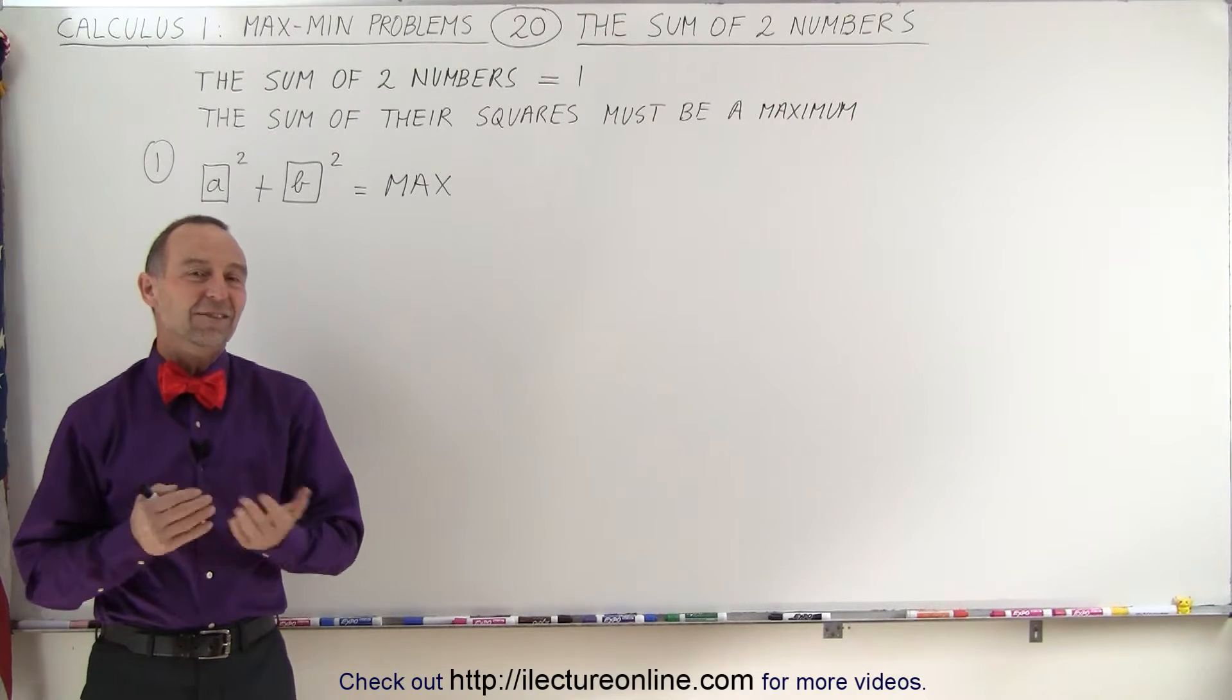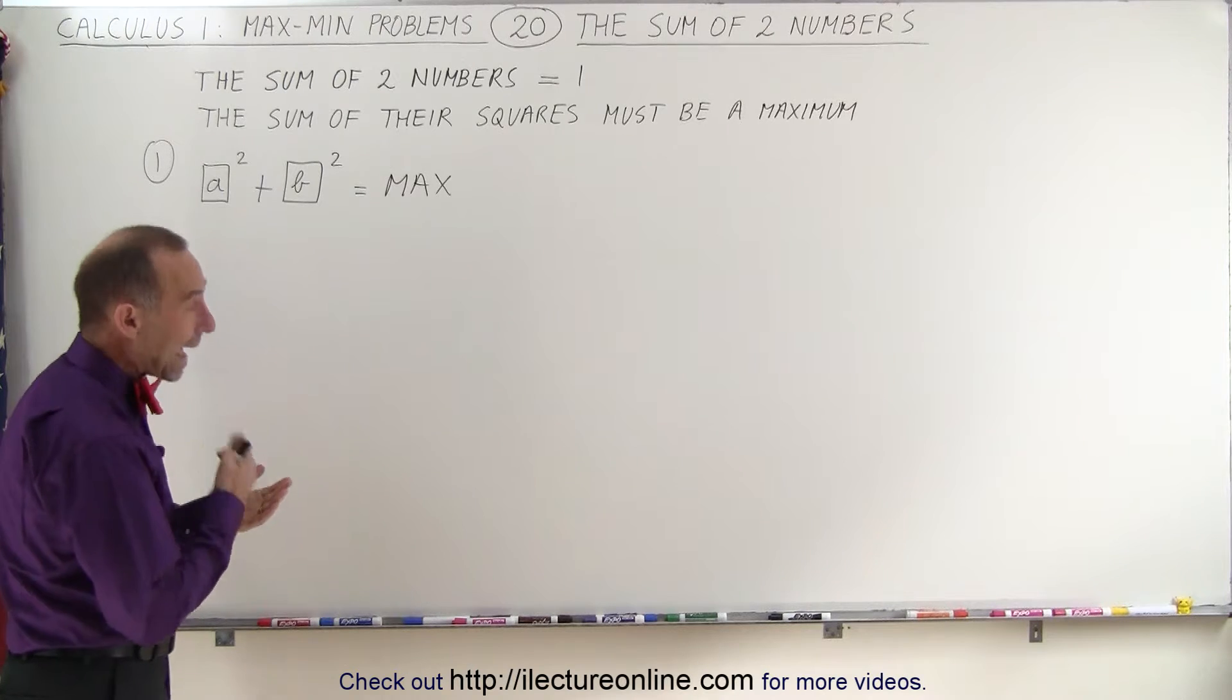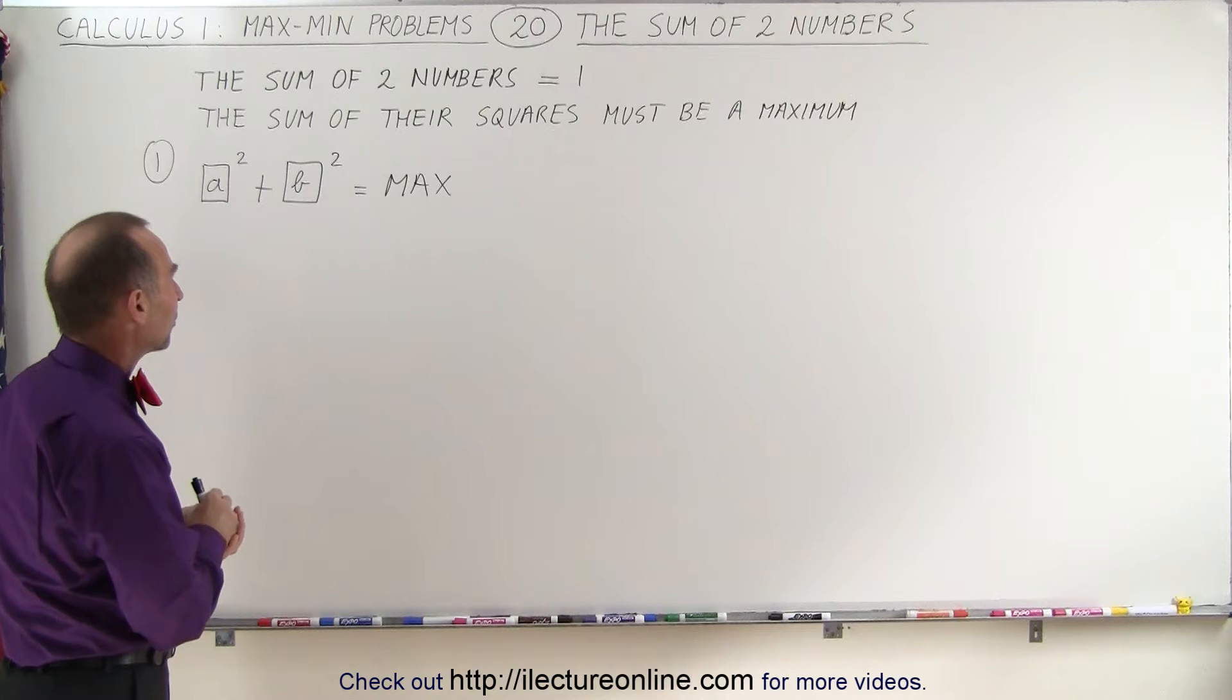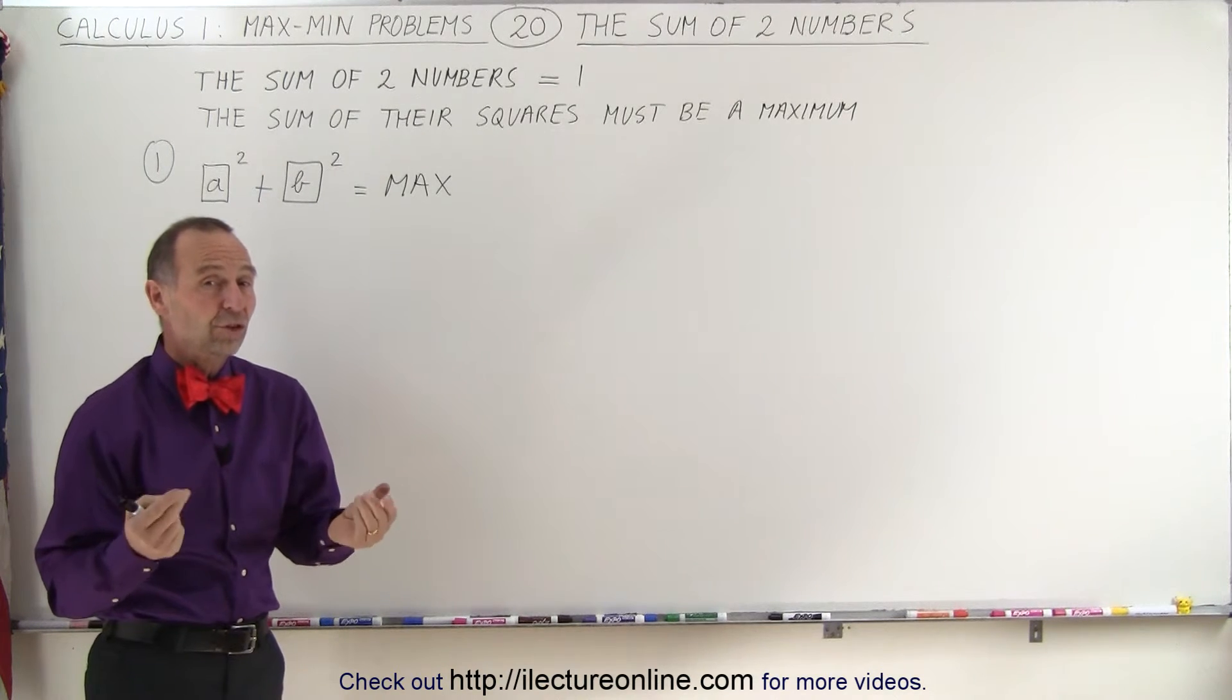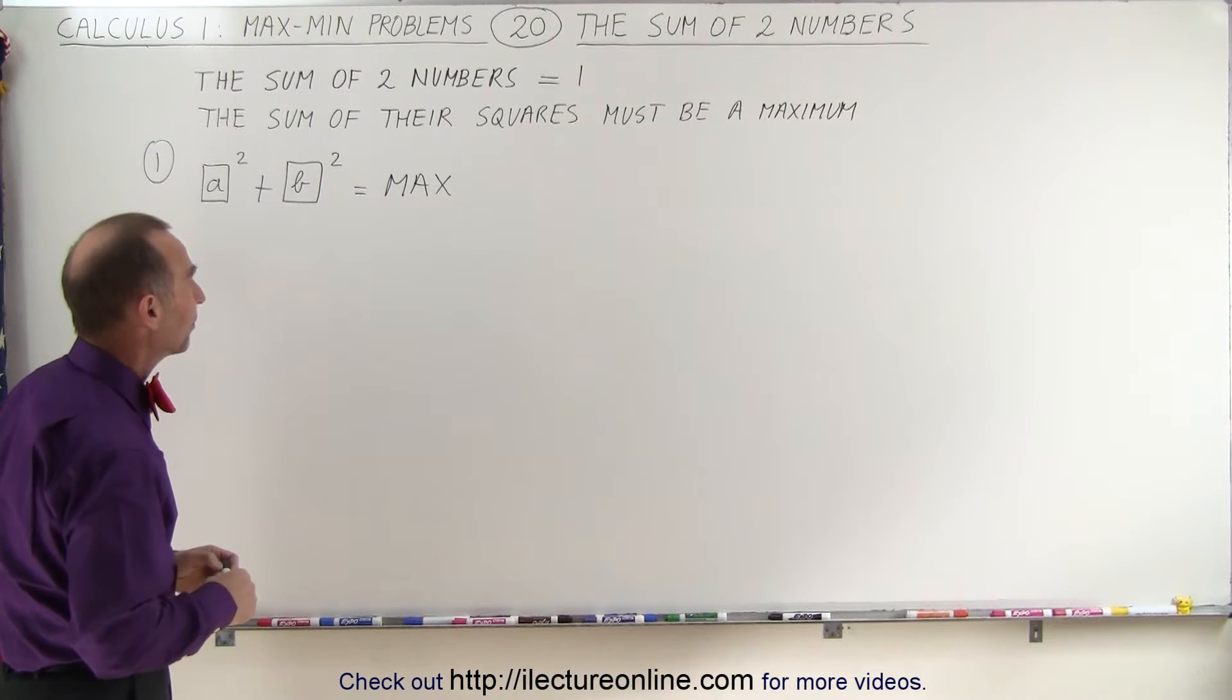Welcome to ElectronLine. In this example, we're given two numbers, let's call them A and B. When we add them, the sum is 1, but when we add the squares of their numbers, we must get a maximum. And so that's what we're trying to figure out: what are those two numbers such that when you square them and sum them together, you get a maximum value.